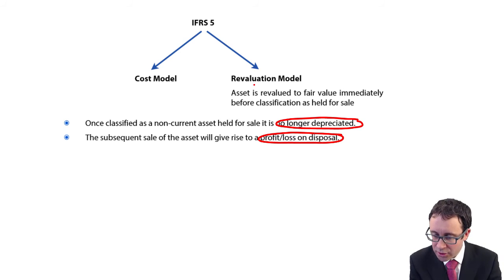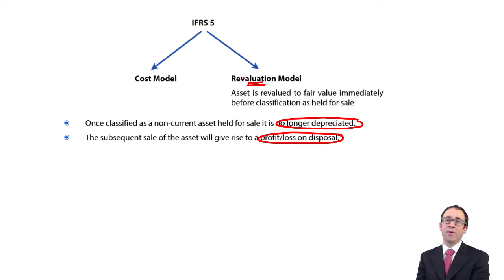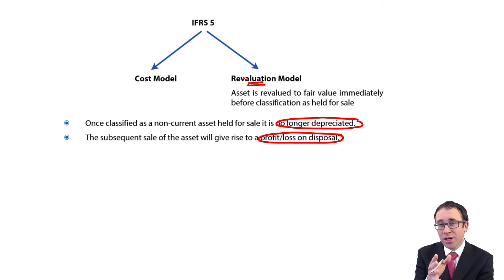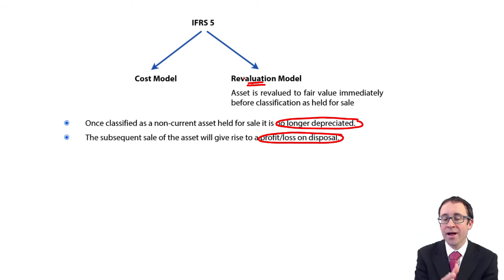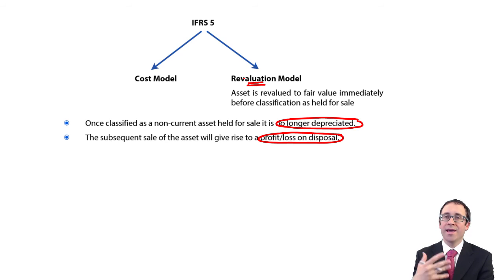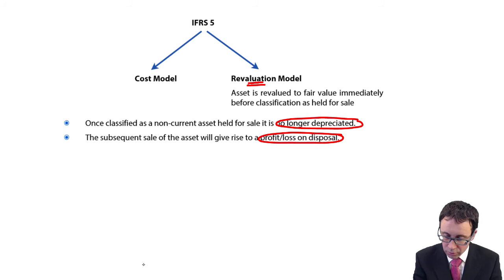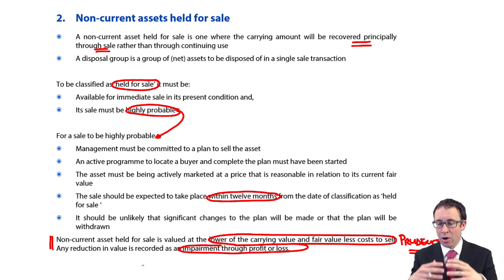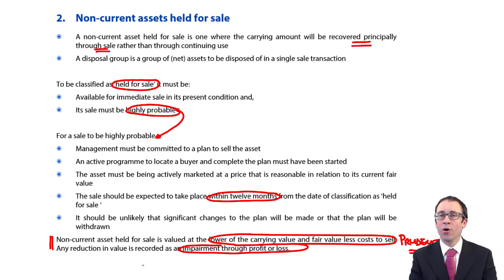Under the revaluation model — usually for land and buildings — immediately prior to reclassification as a non-current asset held for sale, you revalue it as normal under IAS 16 to fair value, and any gain goes through other comprehensive income. Once you have done that, you go back to the normal rules and value it at the lower of the carrying value and fair value less cost to sell, bearing in mind that the carrying value is now that up-to-date fair value.